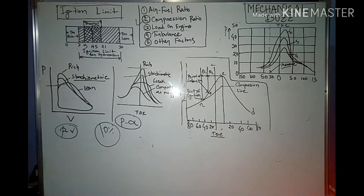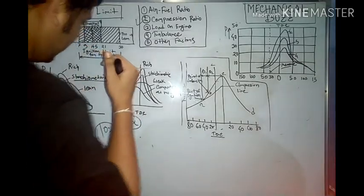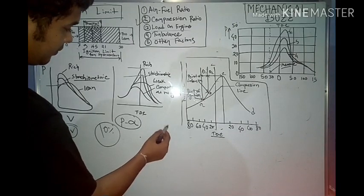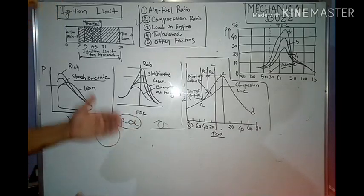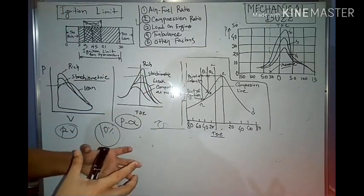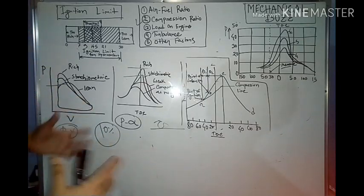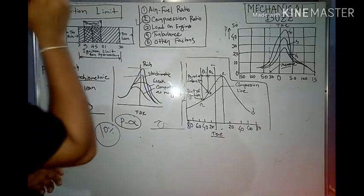The fourth factor is turbulence, which is very important. At the end of the compression stroke, the air-fuel mixture has an unsteady flow inside the cylinder. This unsteady flow helps prepare a good air-fuel mixture and, importantly, increases the coefficient of heat transfer — which in turn increases combustion speed, or more precisely, the self-propagation of the flame.